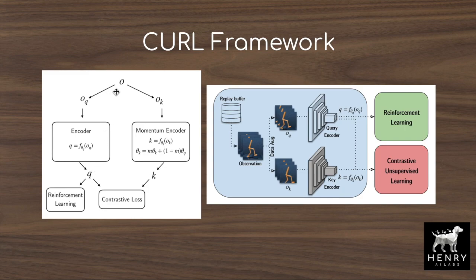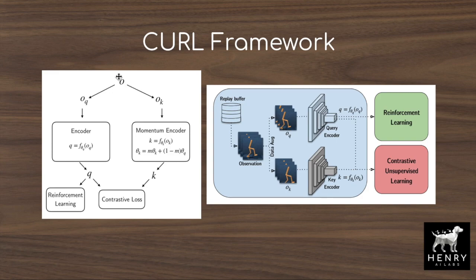The stack of frames is augmented by cropping — say from a 100x100 frame, you crop out an 84x84 patch of the same stack of frames applied sequentially, and that becomes the positive key. You then match it with all other cropped frames from the entire replay buffer to form the negative keys. This contrastive loss helps the RL agent learn the challenging mapping from high-dimensional stacks of frames into lower-dimensional representations for control tasks like bipedal walking or cheetah run.